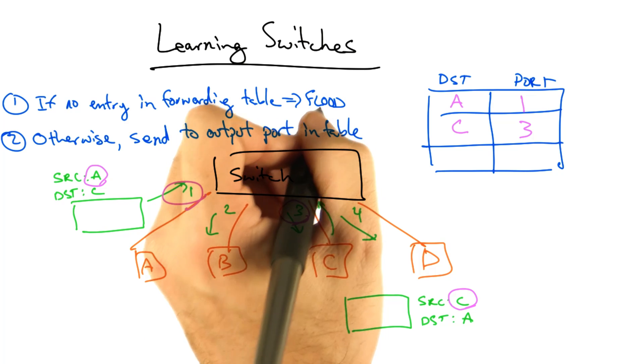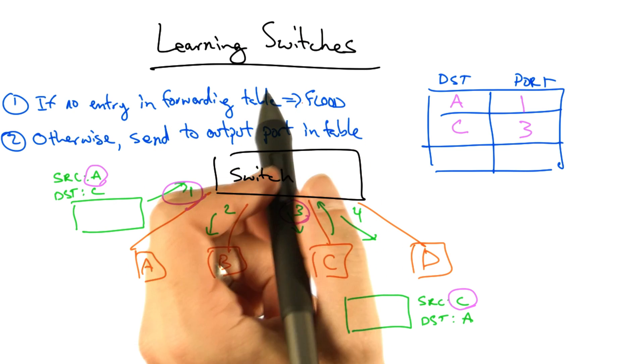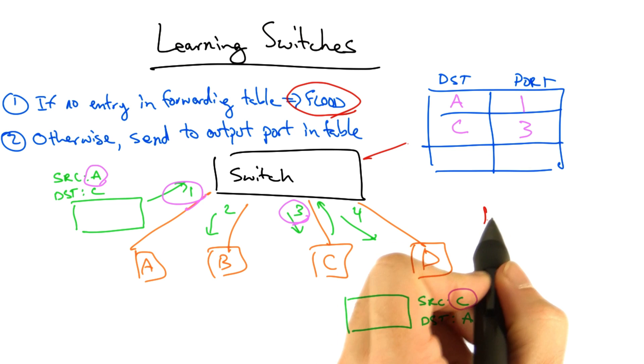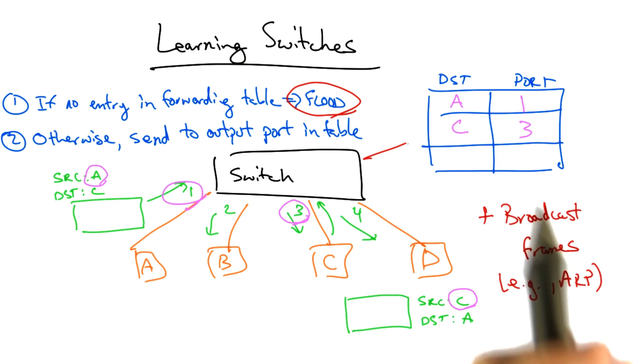Note that learning switches do not eliminate all forms of flooding. The learning switch must still flood in cases where there's no corresponding entry in the forwarding table, and also these switches must forward broadcast frames such as ARP queries.